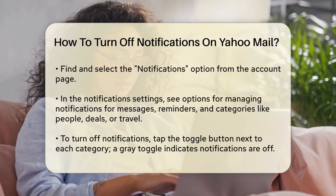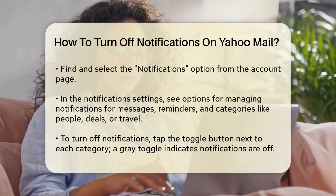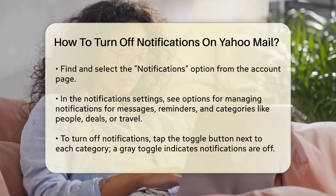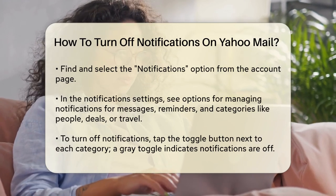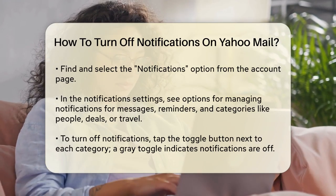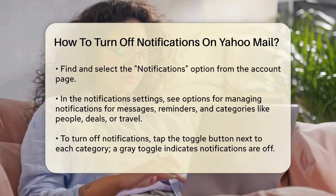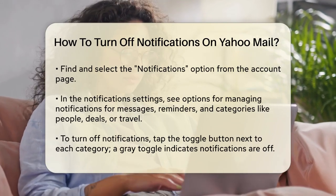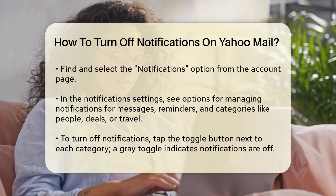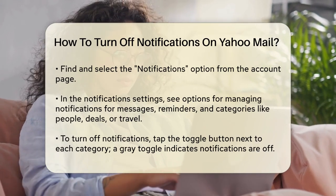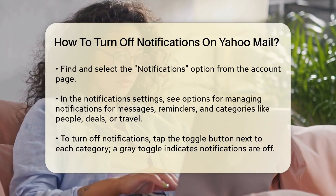Once you're in the Notifications settings, you'll see several options. You can manage notifications for all messages, reminders, and specific categories like people, deals, or travel package tracking. To turn off notifications, simply tap on the toggle button next to each category you want to disable. When the toggle turns gray, it means the notifications for that category are off.